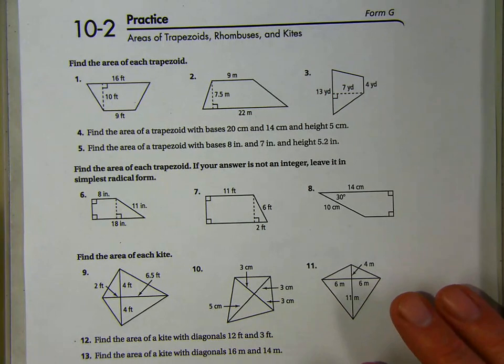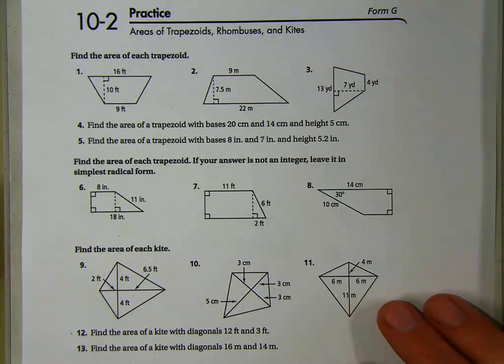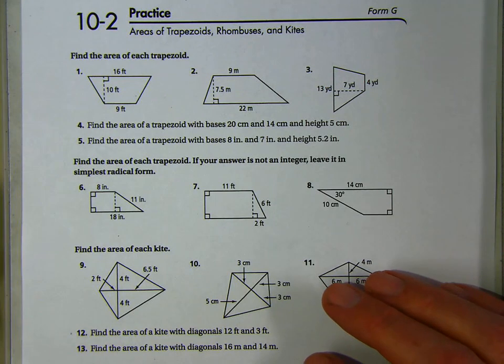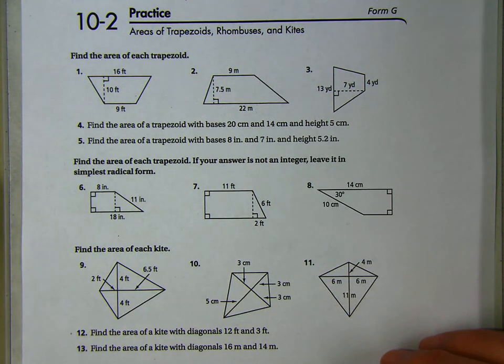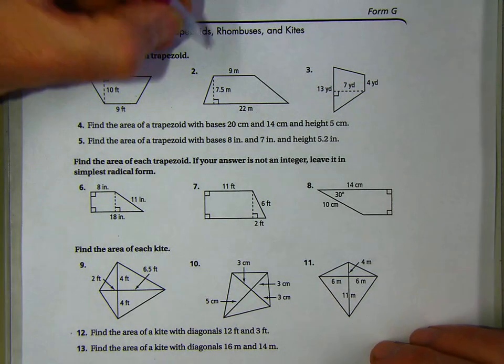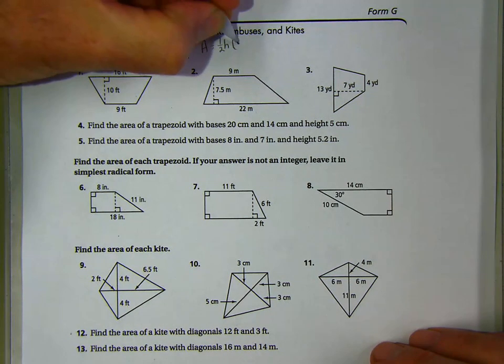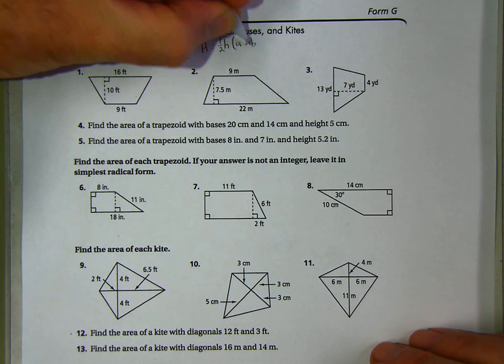Okay, looking at practice 10-2, this was the area of a trapezoid. The area of a trapezoid, of course, was area equals one-half the height times the sum of the bases. So it's area equals one-half height, and the bases are A and B.